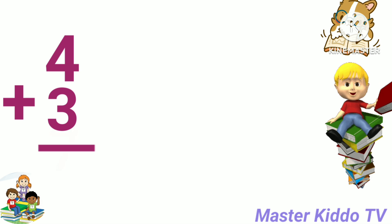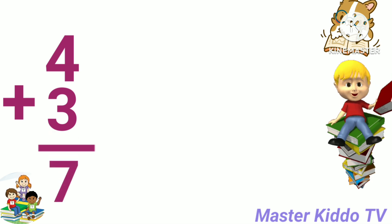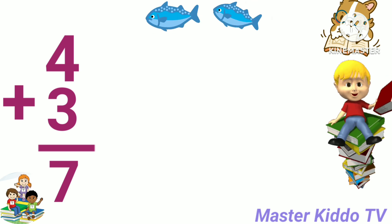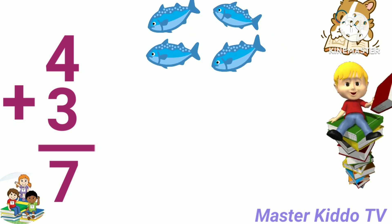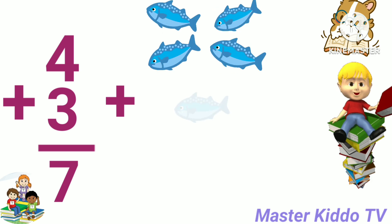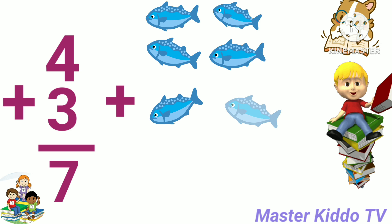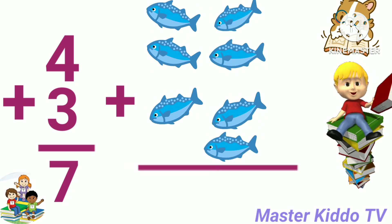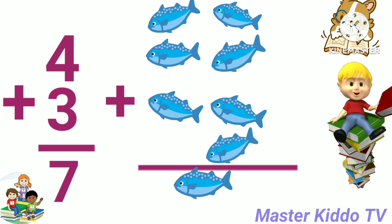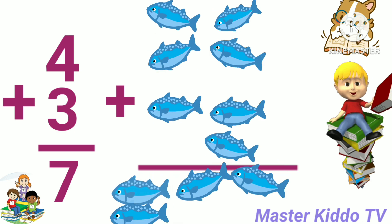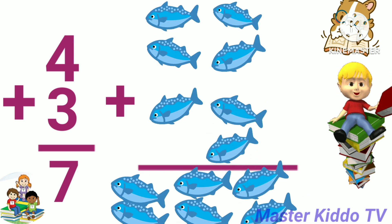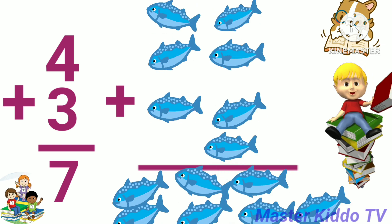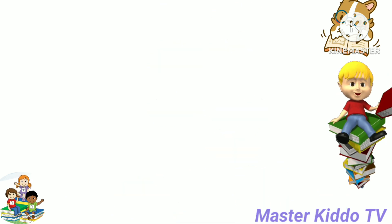4 plus 3 is equal 7. Now we add pictures: 4 fish plus 3 fish. 4 fish plus 3 fish equals 7 fish. 4 plus 3 is equal 7.